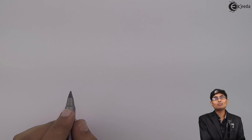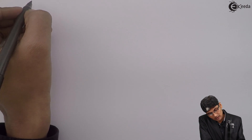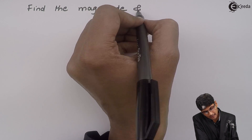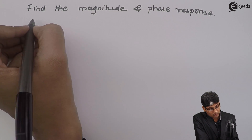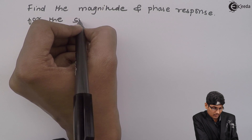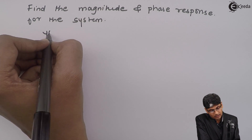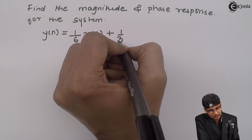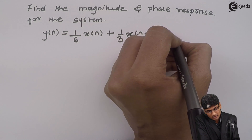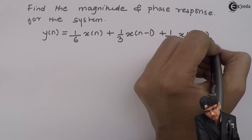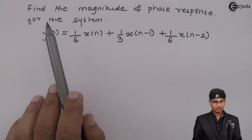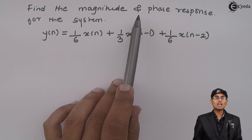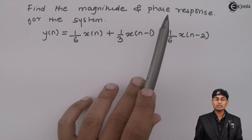Hello friends, let us see a problem on frequency response. The problem says: find the magnitude and phase response for the system given by the following difference equation: y(n) = (1/6)x(n) + (1/3)x(n-1) + (1/6)x(n-2). Sometimes they might ask you to find the frequency response — even then, you have to find both the magnitude and phase responses.